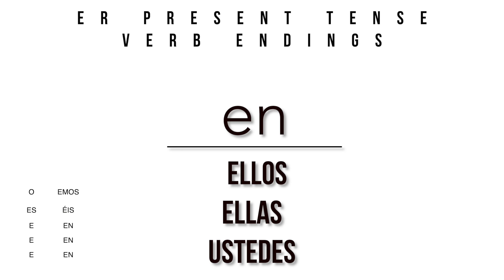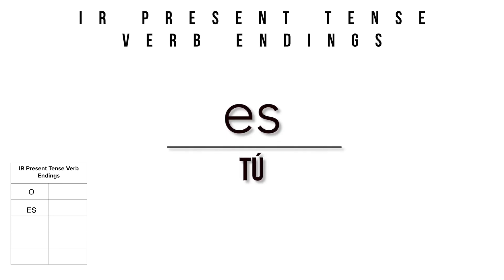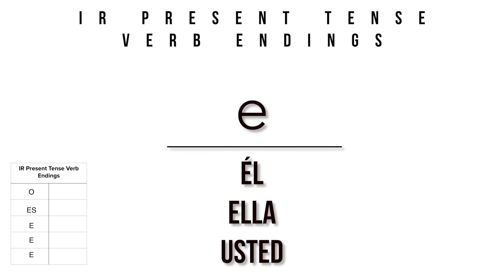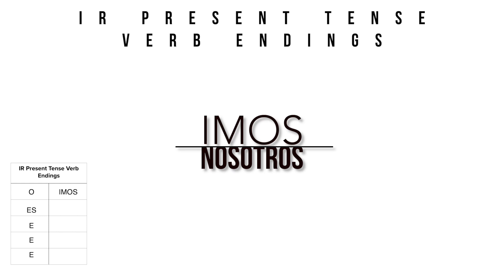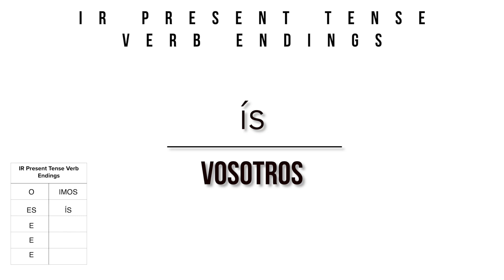The IR verbs are the same as the ER chart except for nosotros and vosotros — those are the only two that differ. So: yo gets O, tú gets ES, él/usted gets E, nosotros gets IMOS, vosotros gets ÍS with a tilde on the I, and ellos/ellas/ustedes gets EN, same as ER.